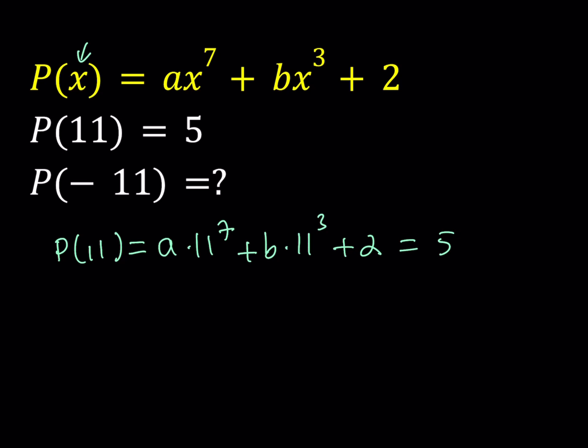Okay, now this gives you an equation. Obviously 11 to the 7th power is a very large number. You don't want to evaluate that. And 11 to the 3rd power is also a large number. Not that large in comparison. But we're trying to find P of negative 11. So could we find a relationship that will make our job easier?